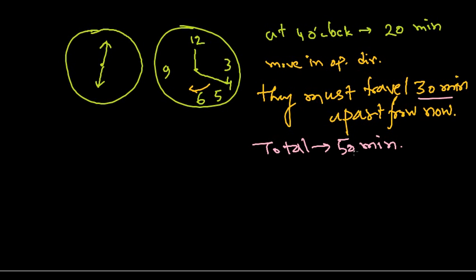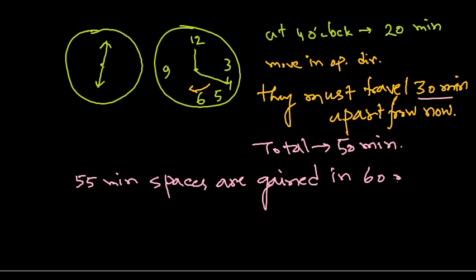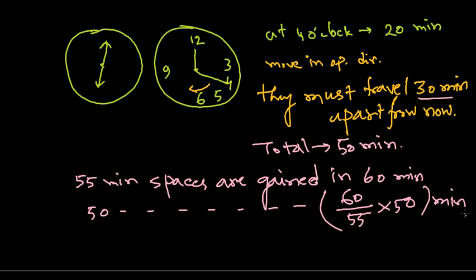So 55 minutes spaces are gained in 60 minutes, so 50 minutes spaces will be gained in - remember - 60 over 55 times 50, that number of minutes. And it is going to be 54 and 6/11 past 4.